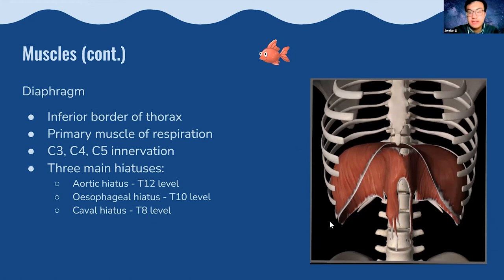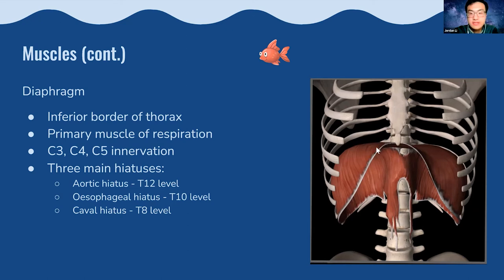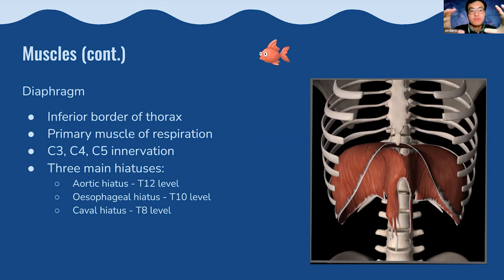The diaphragm forms the inferior border of the thorax and is the primary muscle of respiration — as the mnemonic goes, 'C3, C4, C5 keeps the diaphragm alive.' It is innervated by the phrenic nerve and has three main hiatuses: the aortic hiatus at T12, the esophageal hiatus at T10, and the caval hiatus for the inferior vena cava at T8. When it contracts it expands the thoracic space, drawing in air by negative pressure; when it relaxes it squeezes air out.